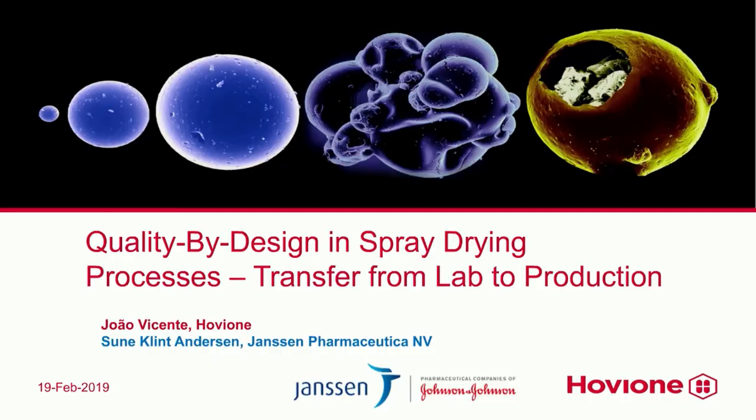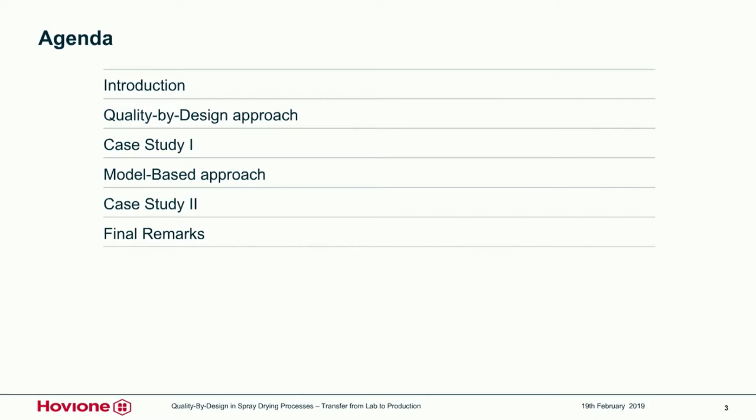Thank you. Welcome, everybody, to this presentation about quality by design from lab to production. My name is Sune Clint Anderson. I'm going to be presenting the first part, where we will introduce the subject, go through the quality by design approach, followed by a case study using the quality by design approach. Then we'll switch to Jao, who will go into depth about the model-based approach with a case study, and then we'll have some final remarks about the application of quality by design in spray drying.